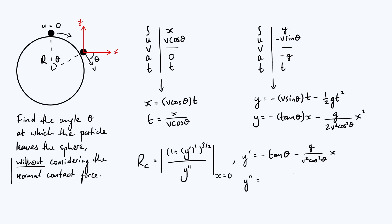Then you differentiate again to find the second derivative. The first term disappears. The second term you just get the coefficient of x, so it's minus g over v squared cos squared theta. Notice that the first derivative depends on x whereas the second derivative is constant, which is a general feature of a parabola.